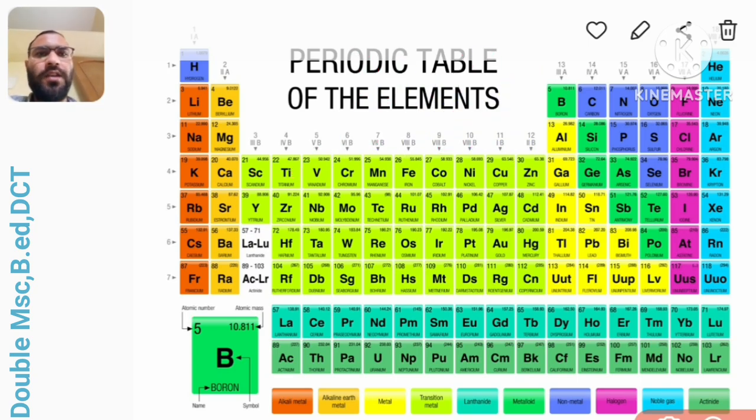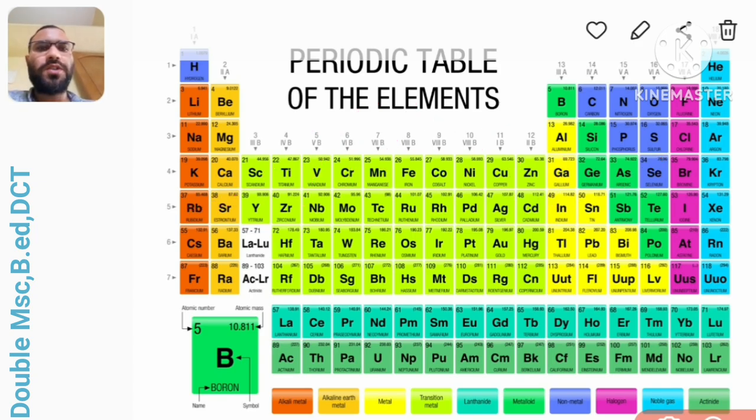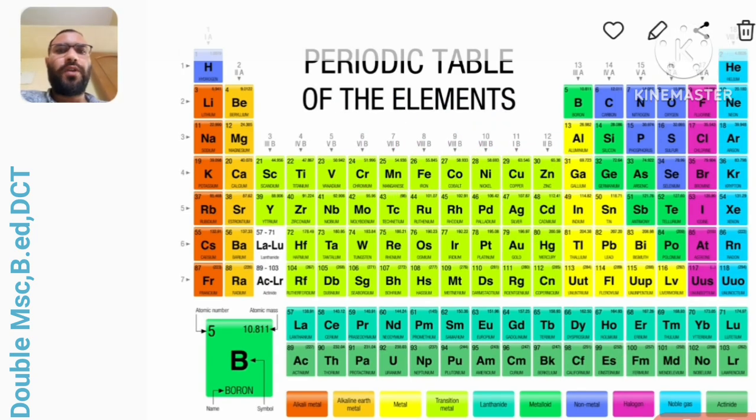Coming to the 4d series that starts from yttrium to cadmium. Here you have to remember: yari zara nibbana motak roro pay i chandani. Yttrium, zirconium, niobium, molybdenum, technetium, ruthenium, rhodium, palladium, silver and cadmium.